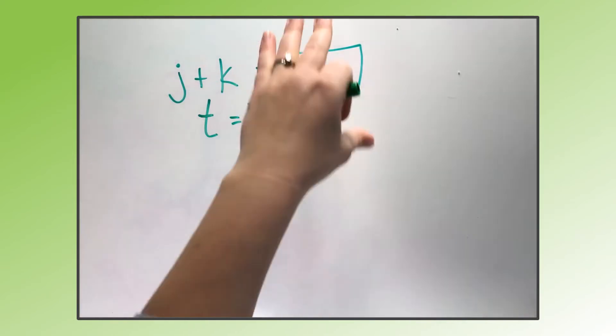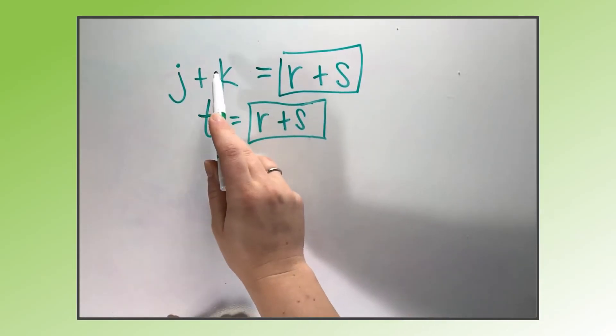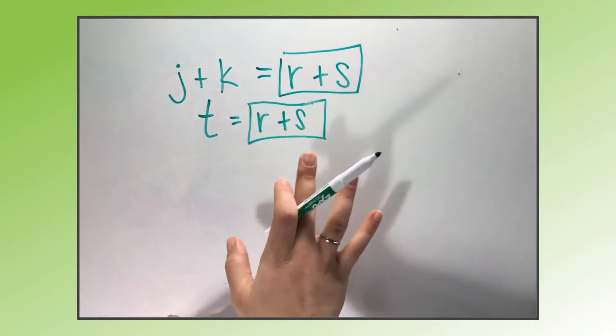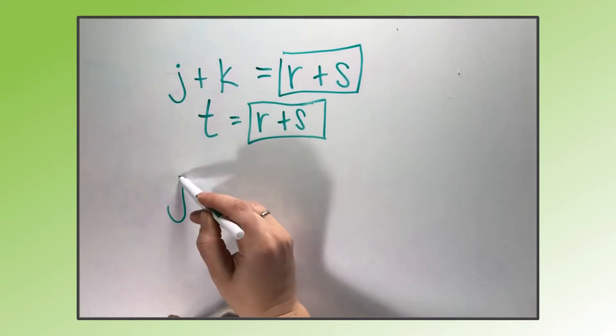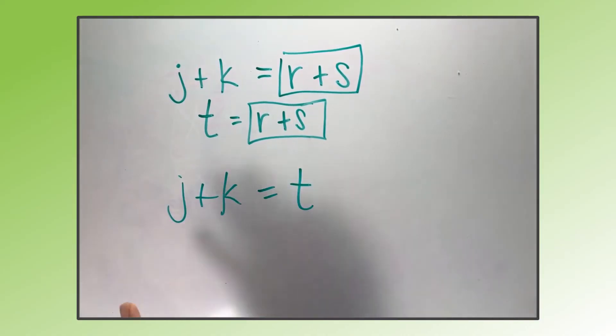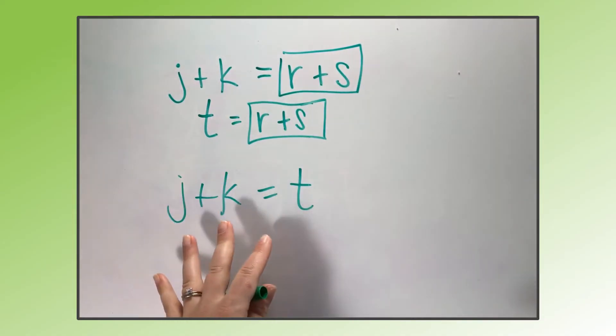So j plus k equals the box, t equals the box. So they must equal each other. If j plus k is equal to the same thing that t is equal to, then j plus k has to be equal to t. So the transitive property is they're both equal to the same thing, then they're equal to each other.